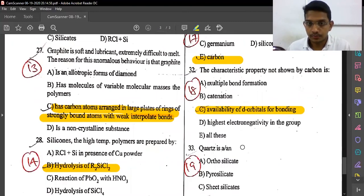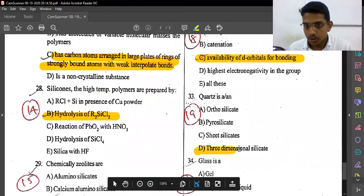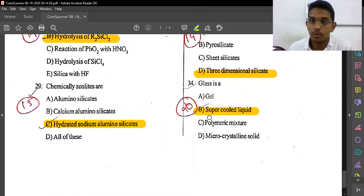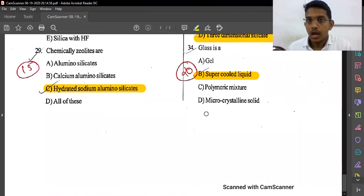Three-dimensional silicate. Glass is a supercooled liquid, option box. Glass is a supercooled liquid. We have covered multiple choice MCQ questions today on this chapter. The essential theory will be in another video. Till then, goodbye. Thank you.